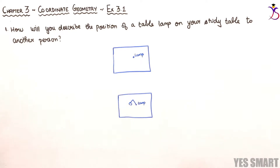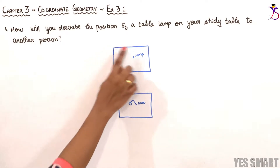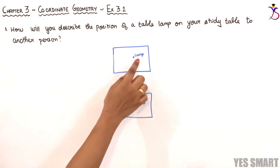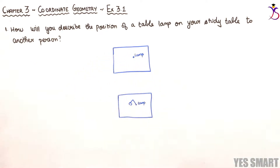The question is about how we will tell another person about the position of a table lamp kept on our study table. We would usually say something like the lamp is in the left corner or right corner. The question is about how exactly we can describe the position of the table lamp on our study table. Let's assume this is our study table and a table lamp is placed here.